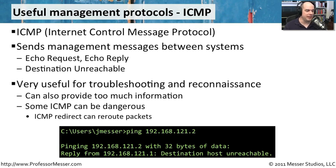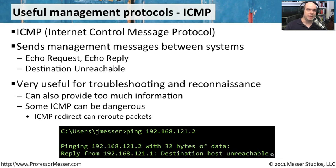Those particular ICMP message types may be restricted. If you're trying to ping a device and you get a message saying the destination host is unreachable, that's because either that device really isn't on the network, or a smart security administrator has restricted ICMP access through the firewall. No matter how much you try, you're never going to get a response back.